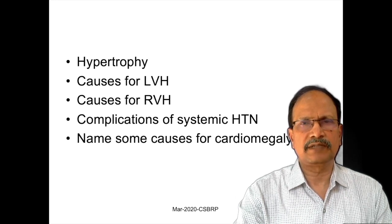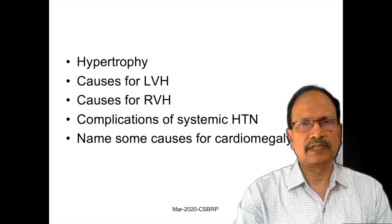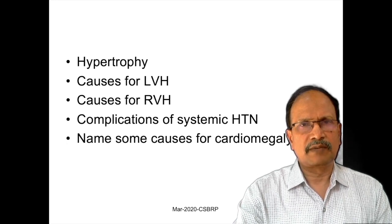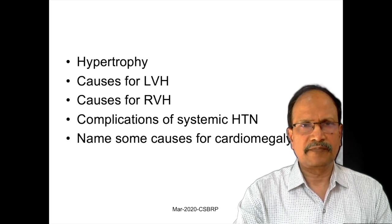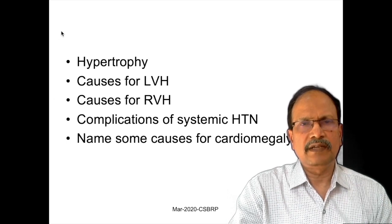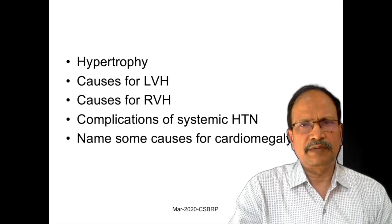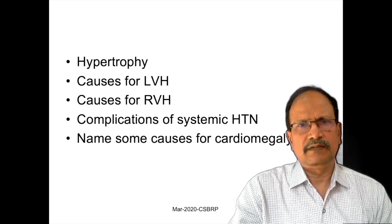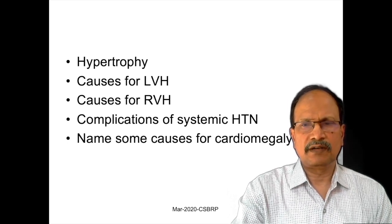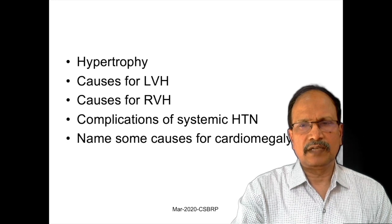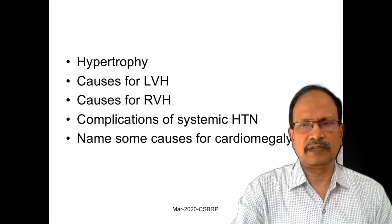Complications of systemic hypertension may include cerebrovascular accidents, ischemic heart disease, renal complications, or sudden death. Causes for cardiomegaly include aortic regurgitation, valvular abnormalities, systemic hypertension, and cardiomyopathies, all of which may be responsible for increased size of the heart.